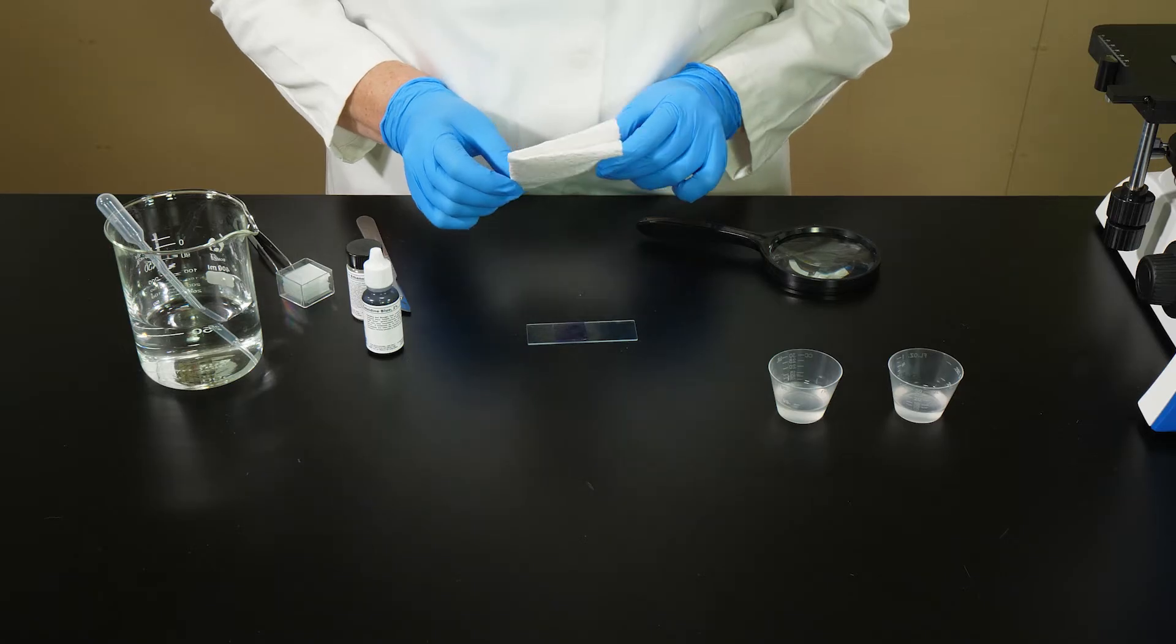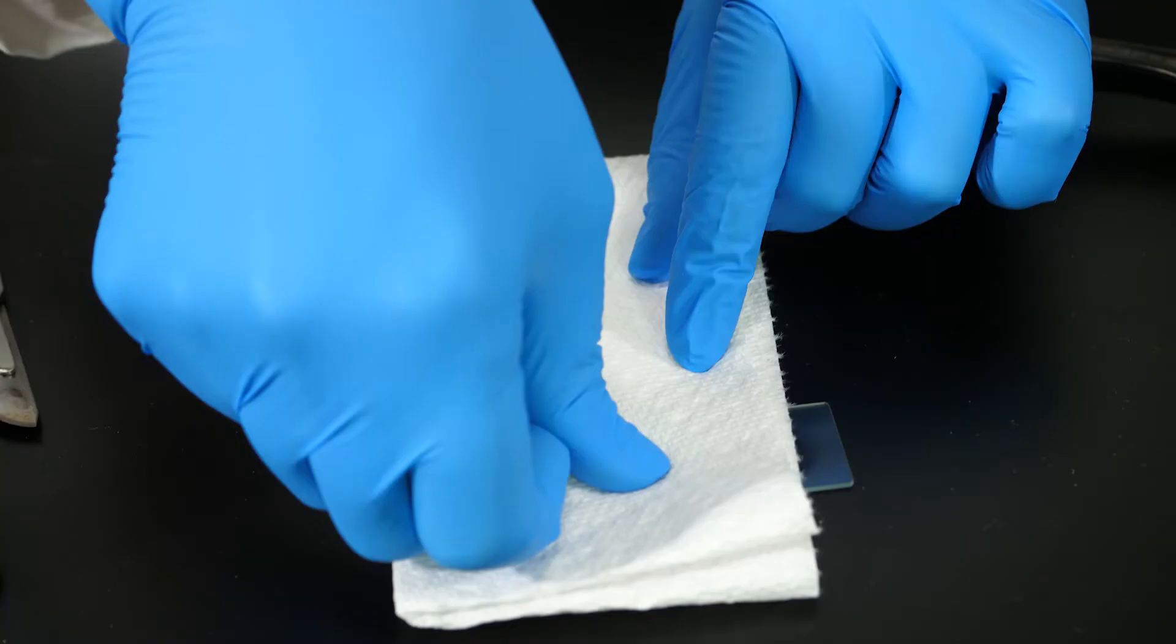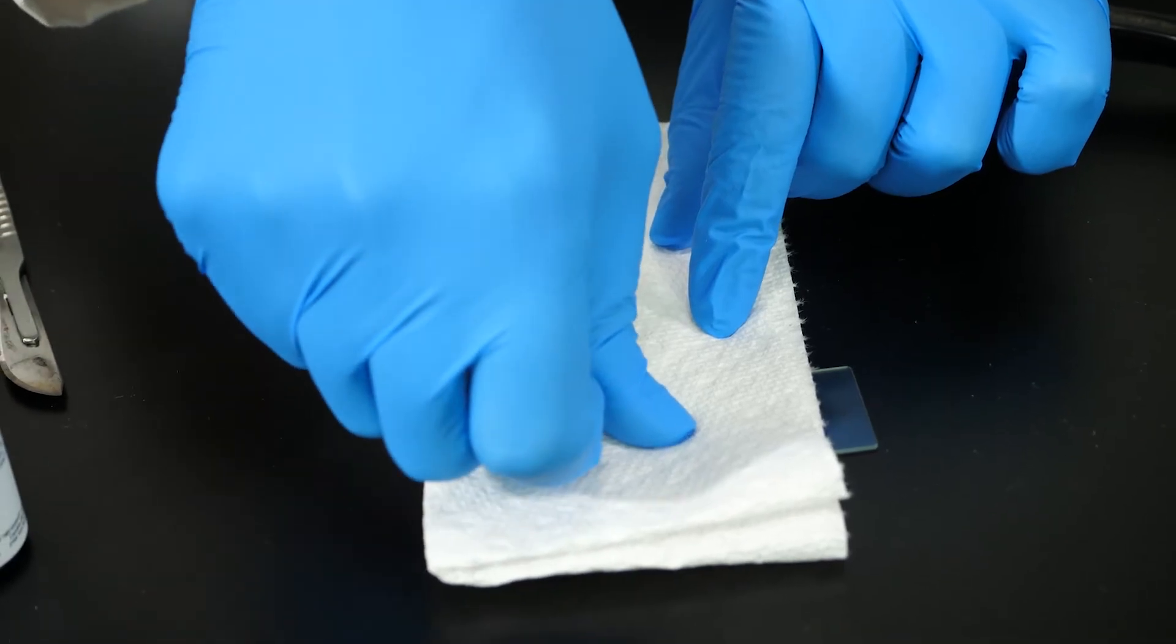The cells of the sample must be in a single layer to allow light to pass through. To make certain the cells are in a single layer, we place a paper towel over the cover slip and then slowly but firmly press down on the cover slip. We must not twist or turn the sample while pressing down on the cover slip, or the cells may be destroyed. And we must not press too hard, or we could crack the cover slip or the microscope slide.